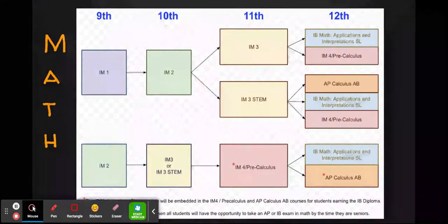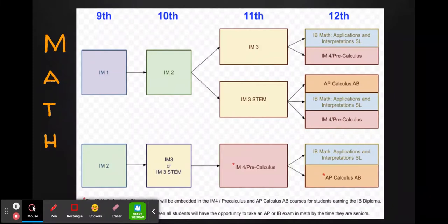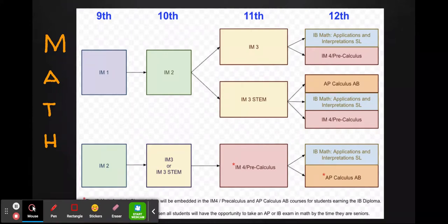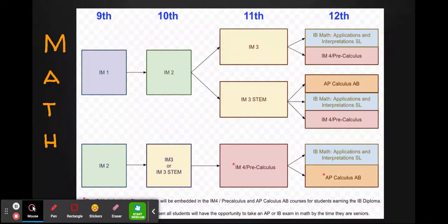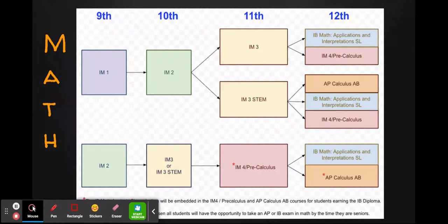Moving on to math, there are a lot of options but we'll go over these pathways. All students are required to take three years of math for graduation, but four years are strongly recommended by both community colleges and four-year colleges. For students who start in Integrated Math 1 as freshmen, they'll move on to Integrated Math 2 in the sophomore year. Students earning A's in Integrated Math 2 in the first semester will move on to Integrated Math 3 STEM; we also have Integrated Math 3 as an option in the junior year. After Integrated Math 3, students have the choice of taking IB Math Applications and Interpretations or IM 4 and Precalculus. Out of IM 3 STEM, students can also take AP Calculus AB for those interested in reaching our highest levels of math.